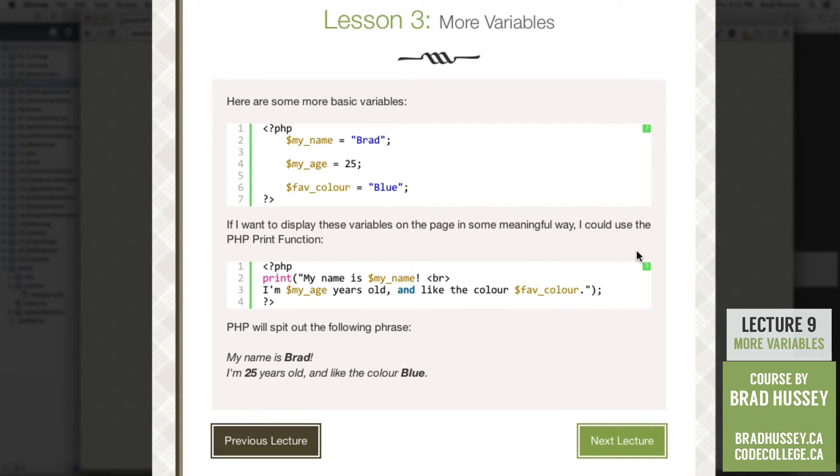So now if I wanted to display those variables on the page in some sort of meaningful way, I could use the PHP print function. So it looks a little bit like this. Use the opening and closing PHP declaration, and I have the print function.